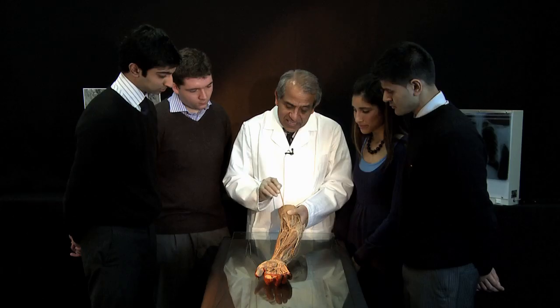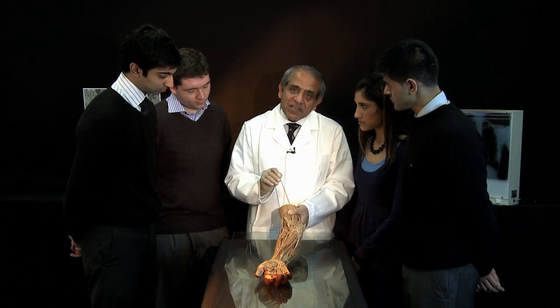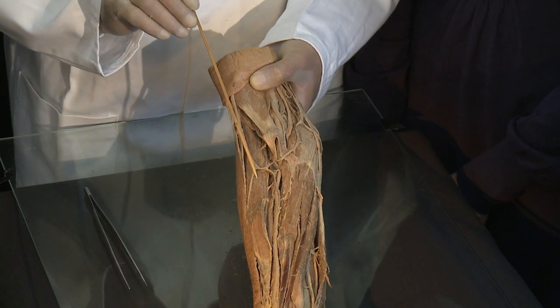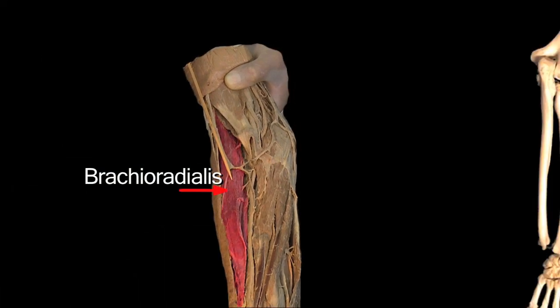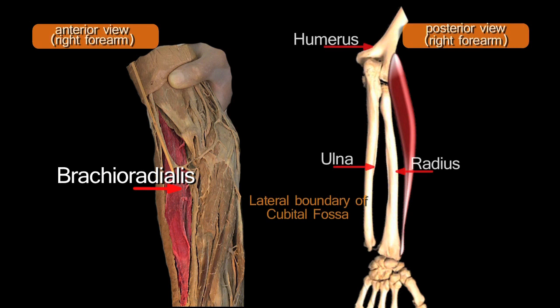The lateral boundary of the cubital fossa is the brachioradialis, which is this muscle here, running from the lateral aspect of the humerus down the lateral aspect of the forearm.